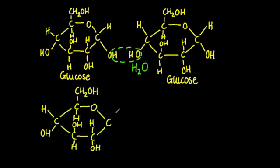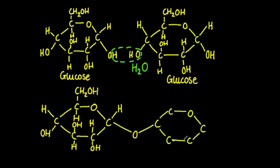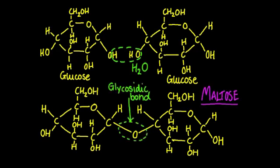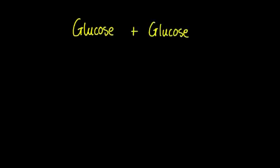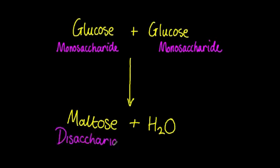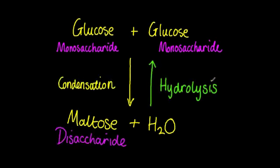The two glucose molecules in formation of the maltose molecule gives us a glycosidic bond which I've labelled right here. Now the removal of the water is referred to as a condensation reaction and if you wanted to reverse that you simply add water to split up the maltose back into the two glucose molecules and that is referred to as hydrolysis.